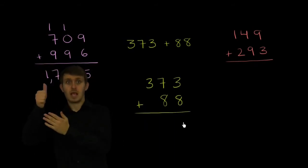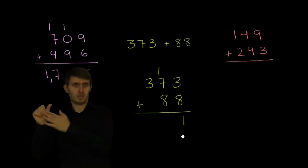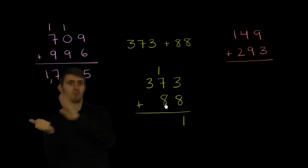So 3 plus 8 is 11. The one in the ones place, the one in the tens place. 10 plus 1 is 11. 1 plus 7 is 8. 8 plus 8 is 16.